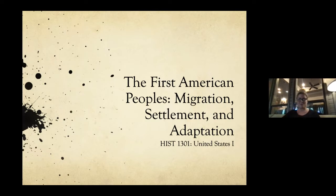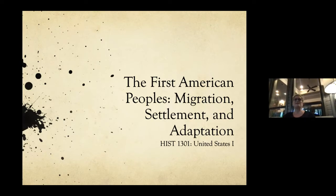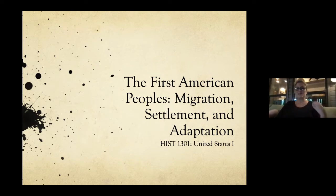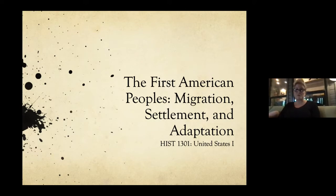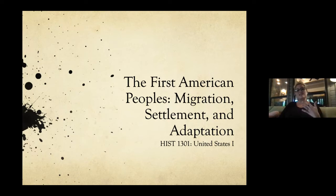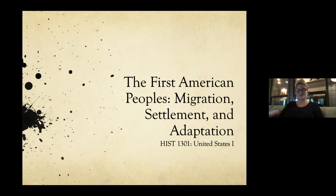We are going to start on the coursework today by talking about how individuals came to the Western Hemisphere. It's really fascinating because to do this, historians have to rely on oral history. This is a period before the written word, so historians have to be more interdisciplinary and look at anthropology and archaeology. It's an interesting intersection of different disciplines, and sometimes it's all right to go into the unknown and learn from other fields.